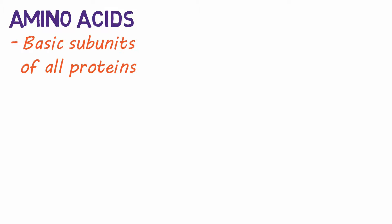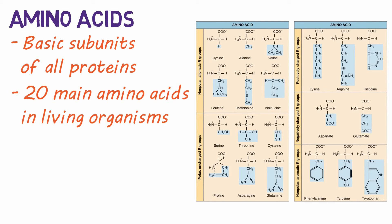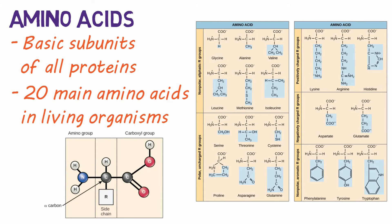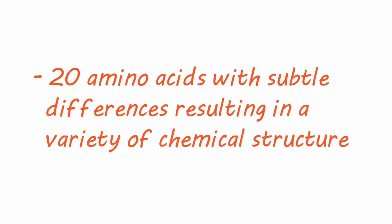The basic subunits for all proteins are called amino acids. There are 20 main amino acids in living organisms. These amino acids all have the same basic structure with a carboxyl group and an amino group, but differ in their R group or side chain. The resulting amino acid may be polar, non-polar, negatively charged, positively charged, or aromatic. If that went over your head, that's okay for this video — just know that there are 20 amino acids with subtle differences resulting in a variety of chemical structures.